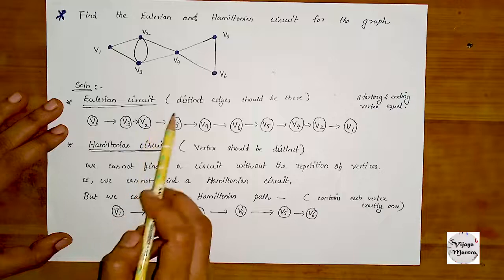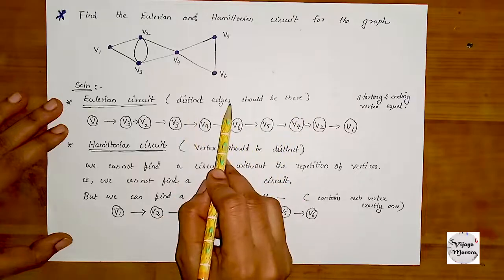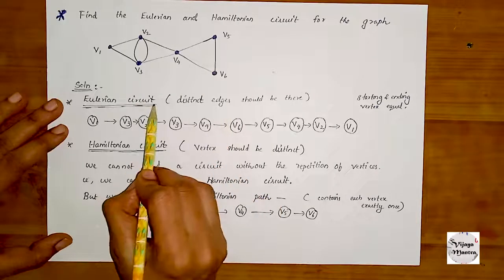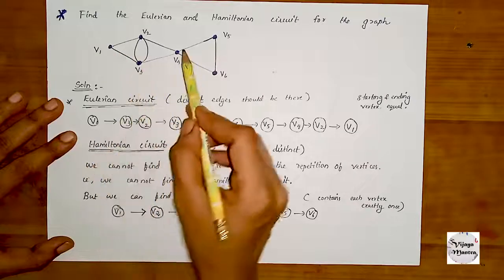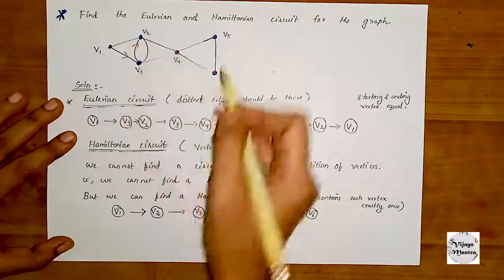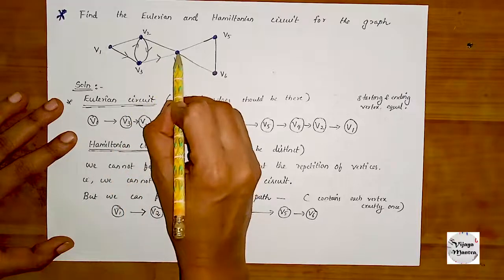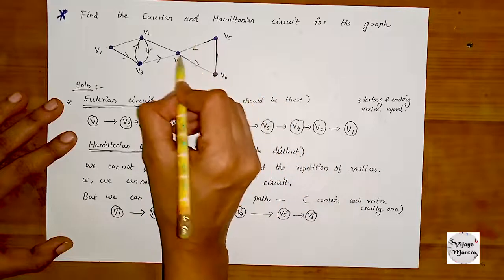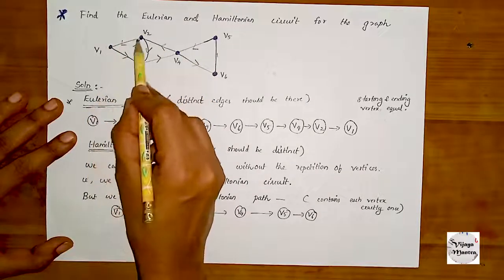For an Eulerian circuit, the distinct edges should all be traversed, and the starting vertex is the same as the ending vertex. For example: v1, v3, v2, v1, v3, v4, v6, v5, v2, v4, v5, v1. The starting vertex v1 is the same as the ending — this is an Eulerian circuit.